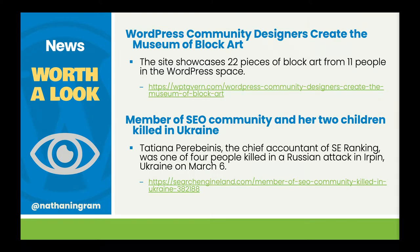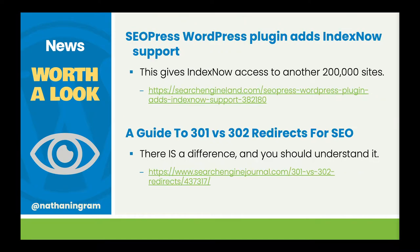A few other articles this month: the WordPress community designers have created a museum of block art featuring 22 pieces of art created with blocks. Sadly, a member of the SEO community, Tatyana Parabinus, chief accountant of SE Ranking, was killed with her two children in Ukraine on March the 6th. SEO Press has added Index Now support — a tool created by Microsoft Bing and Yandex that lets your website proactively notify supporting search engines when a change is made. Google is looking into Index Now but hasn't confirmed adoption. Also, there's a good guide available on 301 versus 302 redirects.